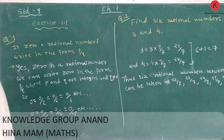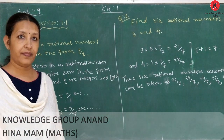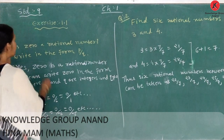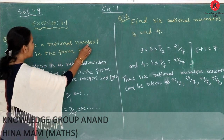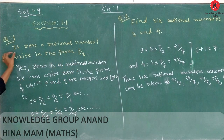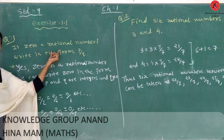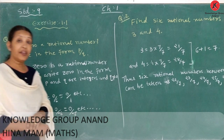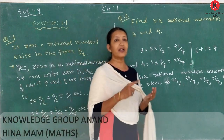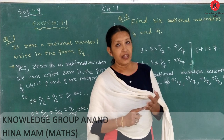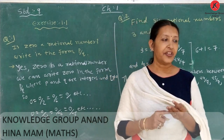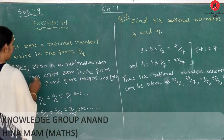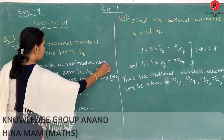Now we start Exercise 1.1. Question number 1: Is 0 a rational number? The question asks whether 0 is a rational number. Yes, 0 is a rational number.